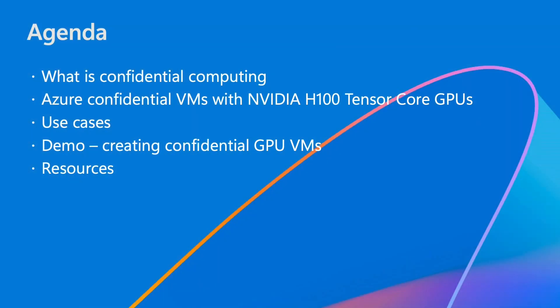Let's quickly look at the agenda we're going to discuss today. We'll briefly discuss what confidential computing is — if you're new to it, we'll give you an overview. Then we'll talk about the new exciting product, Azure Confidential VMs with NVIDIA H100 Tensor Core GPUs, some use cases, a demo covering VM creation via CLI and the Azure portal, and finally some resources for further reference.